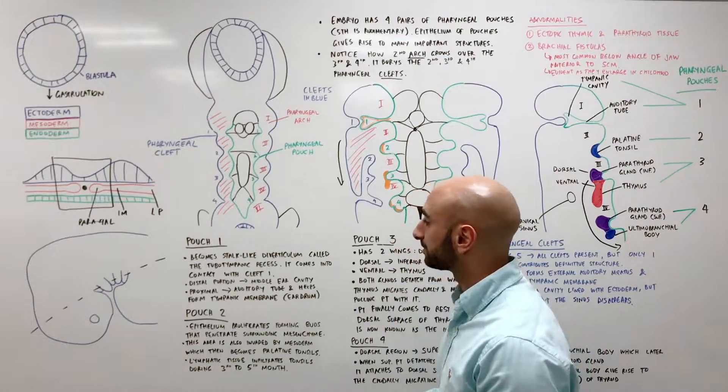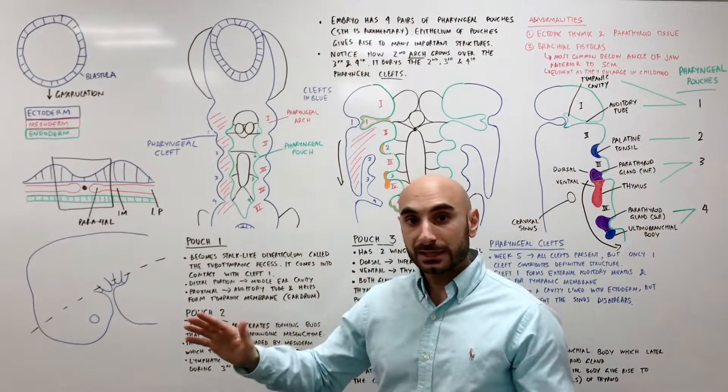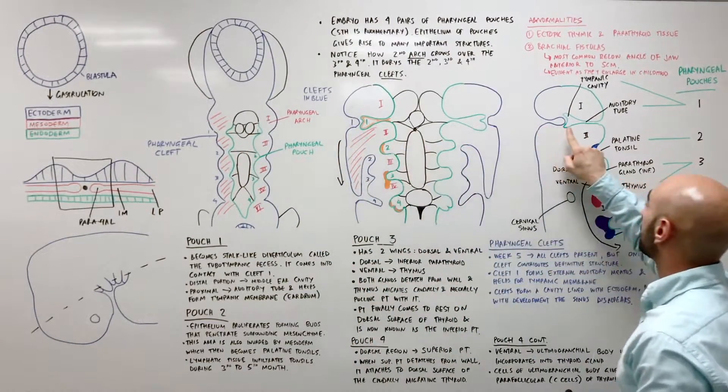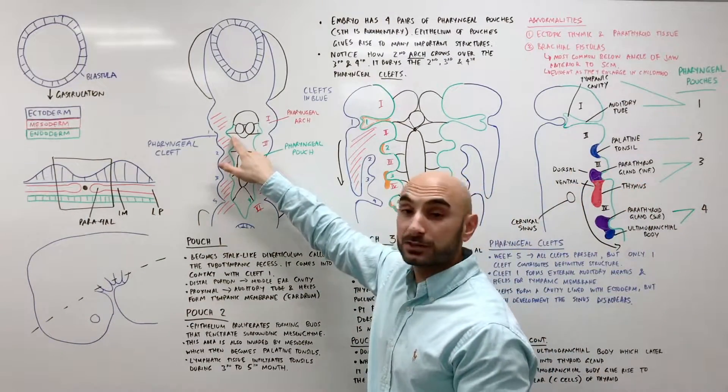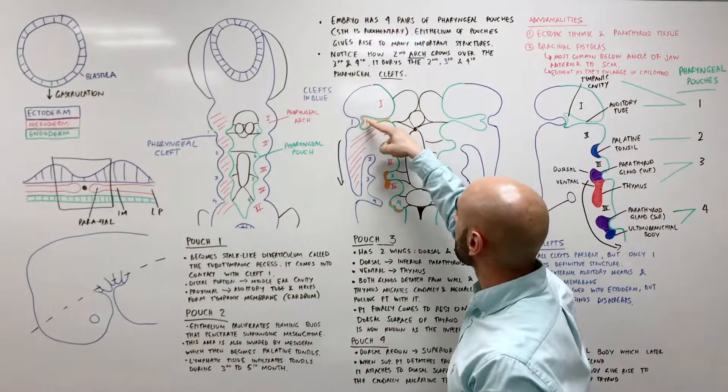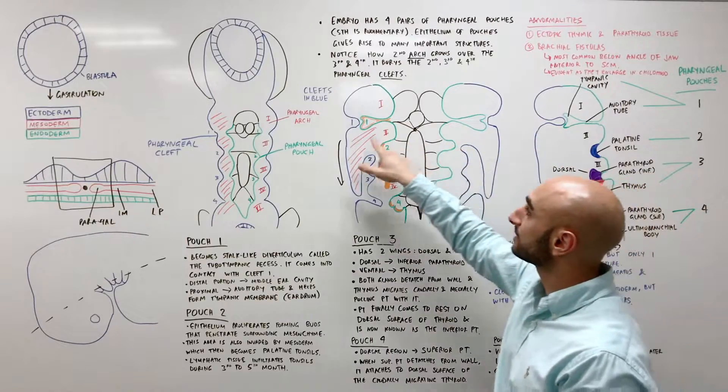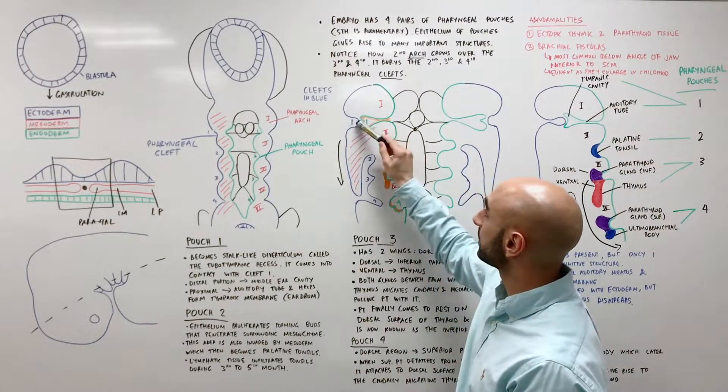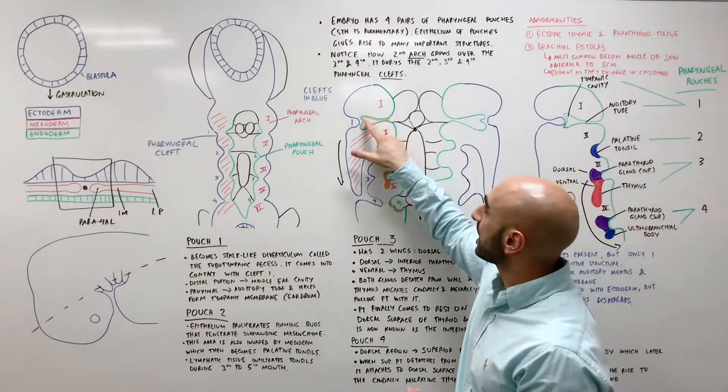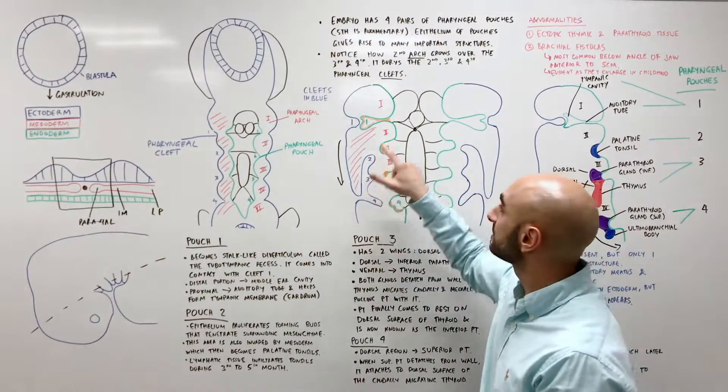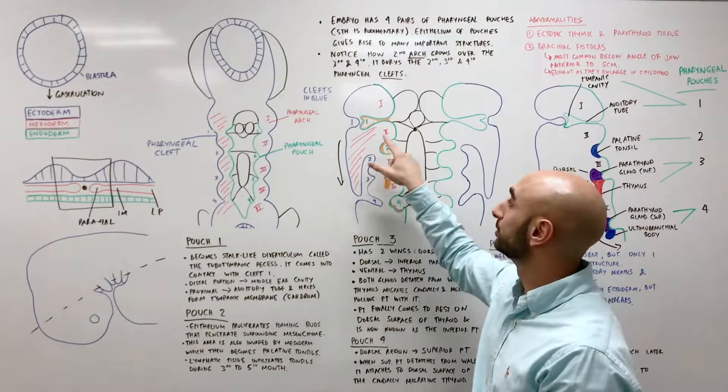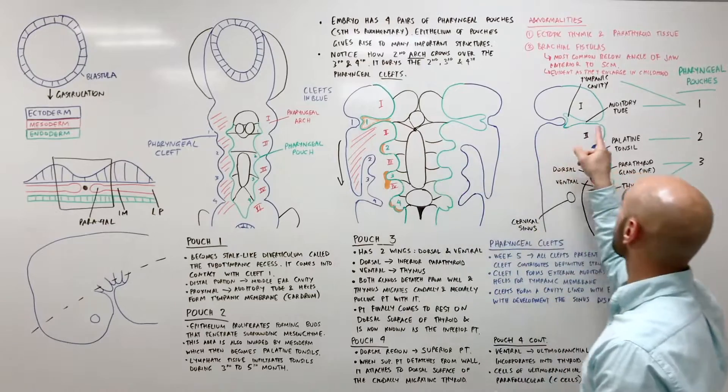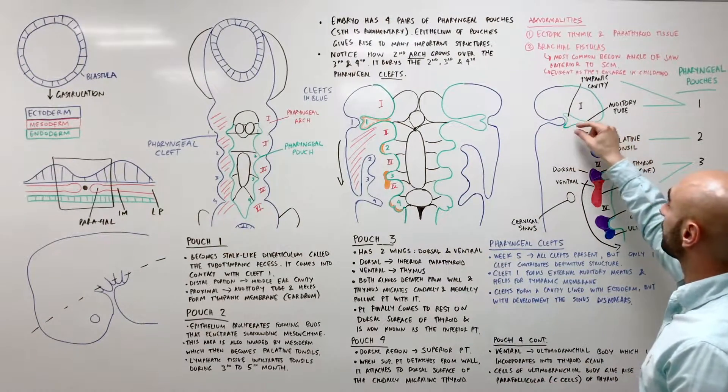So let's start with pouch 1. To break it down very simply, only focus on pouch 1 where I'm pointing. Step 1, step 2, step 3. So the first pharyngeal pouch will become a diverticulum that looks like a stalk and it will push against the first pharyngeal cleft and it will help to become the tympanic membrane or the eardrum. So this right here is going to be your eardrum. It becomes a tympanic cavity and it also becomes the inner ear tube, the eustachian tube. So notice how this forms a diverticulum over here in orange and then over here until it sort of looks like more of a narrow tube.